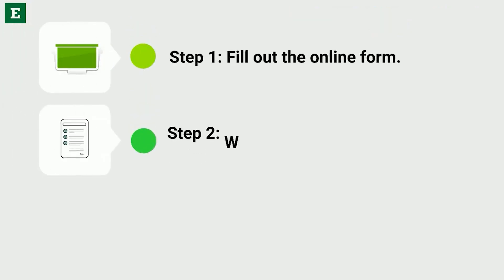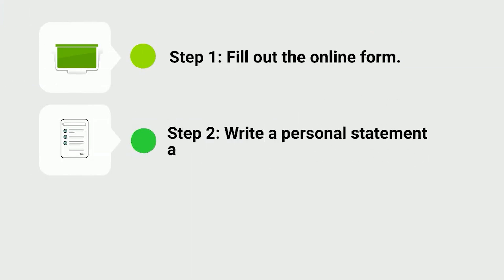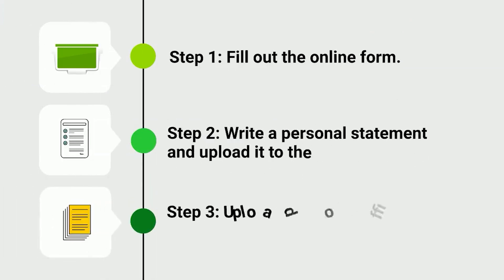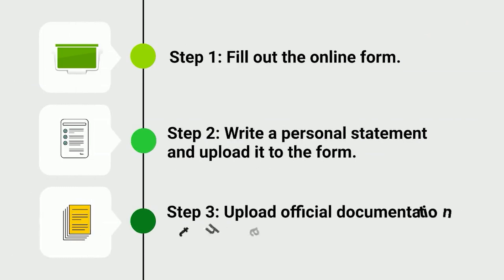Here are the steps for the academic reinstatement submission process. It cannot be stressed enough that each of these items must be included in your submission in order to be reviewed by the reinstatement committee. Step 1: Fill out the online form. Step 2: Write a personal statement and upload it to the form. Step 3: Upload official documentation that supports your statement.